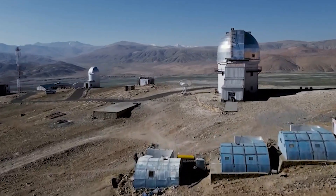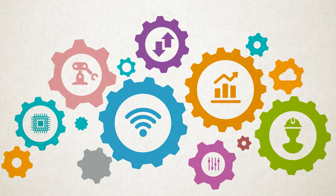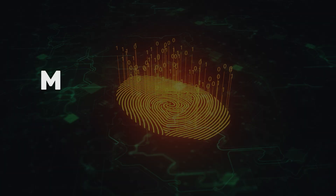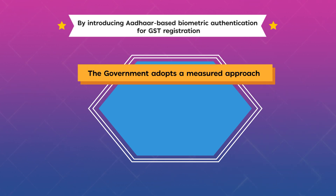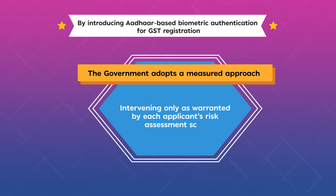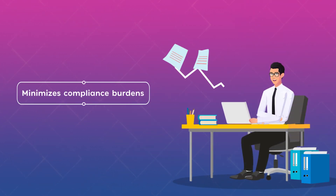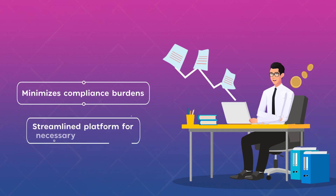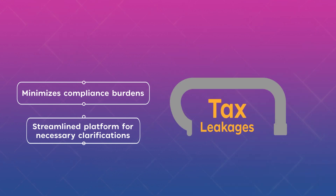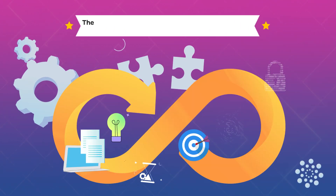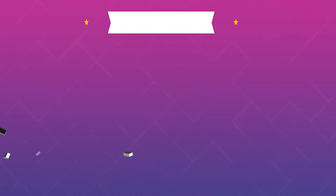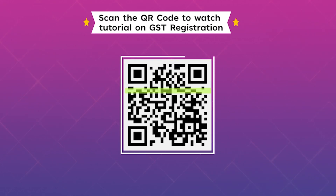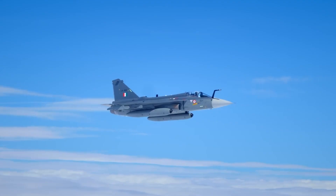As India advances towards the vision of Viksit Bharat 2047, this system stands as a testament to the government's philosophy of intelligence-based minimum intervention. By introducing Aadhaar-based biometric authentication for GST registration, the government adopts a measured approach, intervening only as warranted by each applicant's risk assessment score. This approach minimizes compliance burdens on legitimate businesses while offering a streamlined platform for necessary clarifications, effectively sealing potential tax leakages. Together, these efforts pave the way for a more transparent, secure, and efficient trade ecosystem. For a deeper dive into the GST registration process, check out the video below — register your business today and be a part of India's growth story.